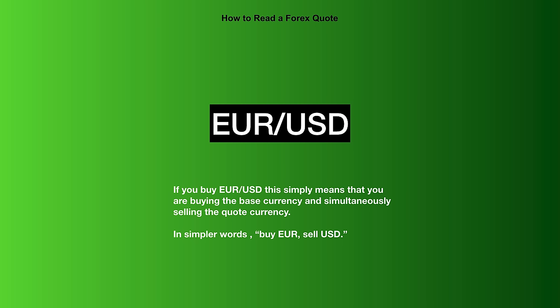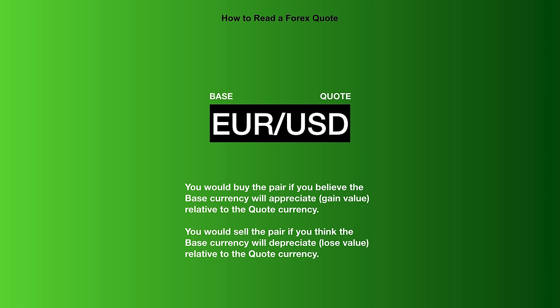So we have Euro/USD and let's say you wish to take a buy. Simply, that means you are buying the base currency while simultaneously selling the quote currency — you are buying Euro whilst also selling the dollar. You would buy the pair if you believe the base currency will appreciate relative to the quote currency, or sell the pair if you think the base currency will depreciate. So if you buy Euro/USD, you're hoping Euro strengthens and the dollar weakens. If you're selling, you're hoping Euro goes down and USD goes up.